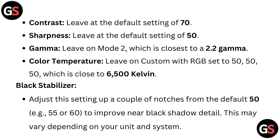Black stabilizer: adjust this setting up a couple of notches from the default 50 — for example, 55 or 60 — to improve near-black shadow detail. This may vary depending on your unit and system.